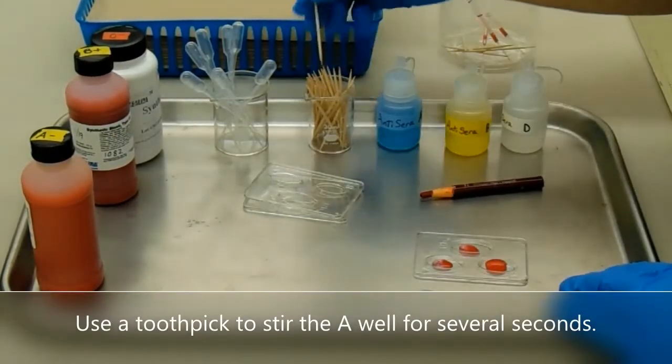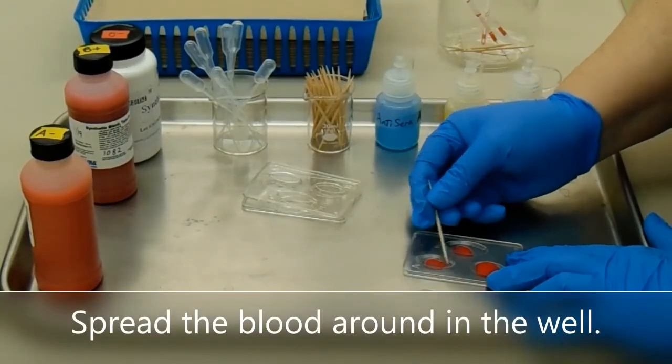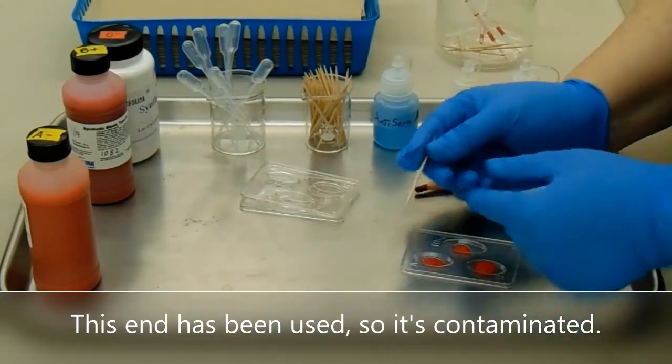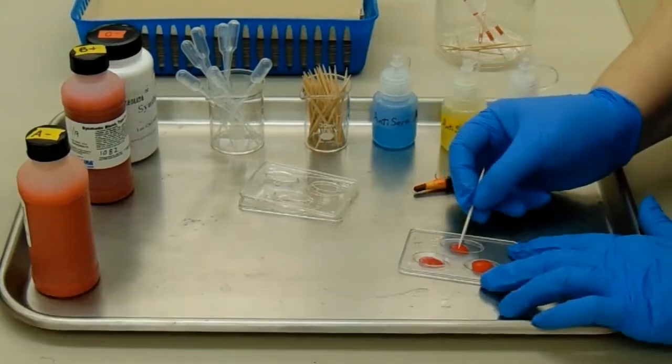Use a toothpick to stir the A well for several seconds. Spread the blood around in the well. This end has been used, so it's contaminated, but we can turn it around and use the clean end to stir another well.